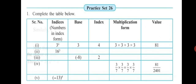Now let us begin with Practice Set 26. You have to complete the table: write the indices (numbers in index form), the base, the index, the multiplication form, and finally the value. The first one is done for you. 3 raised to 4 is the index form given. The base is 3, index is 4. Multiply 3 by itself 4 times: 3 threes are 9, 9 threes are 27, 27 threes are 81.